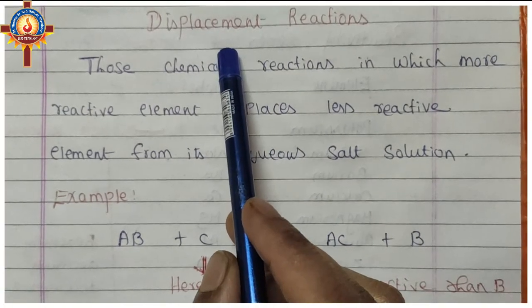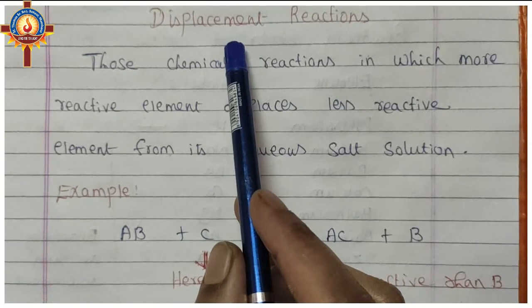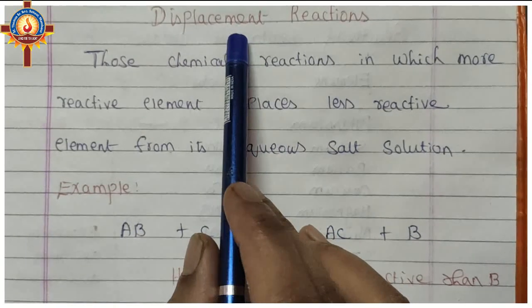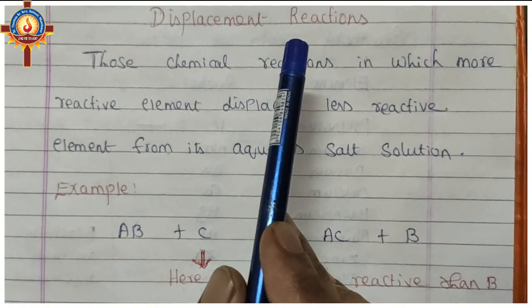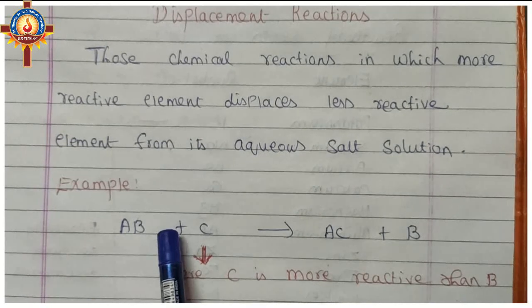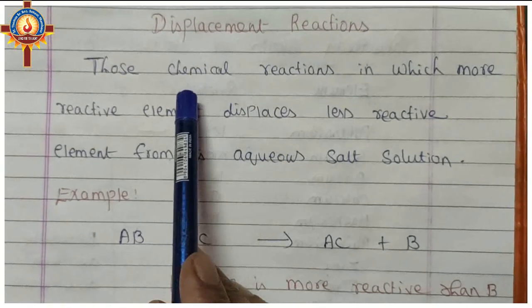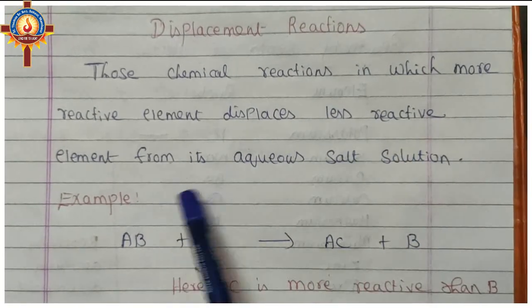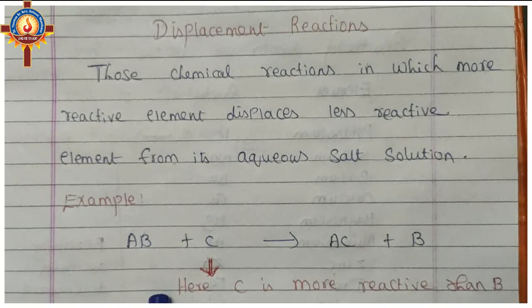In the previous video we covered combination and decomposition reactions. Now in this video we are going to see the third type of reaction, that is displacement reaction. As the name indicates, in this reaction the position of elements changes — one element takes the place of another. Displacement reactions are those chemical reactions in which a more reactive element displaces a less reactive element from its aqueous salt solution.